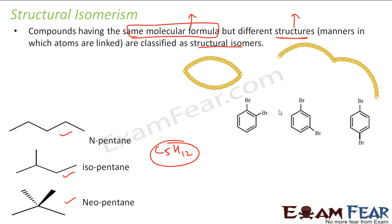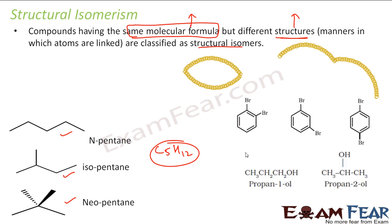These three compounds also have the same molecular formula, but if you see, the structural formula is different. For example, propan-1-ol and propan-2-ol have the same molecular formula — the number of carbon, hydrogen, and oxygen atoms is the same in both — but the structural formula is different. In propan-1-ol, the OH group is attached to the last carbon; here in propan-2-ol, it is attached to the middle carbon. This is also an example of structural isomers.